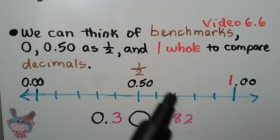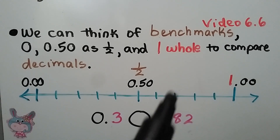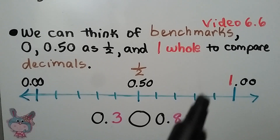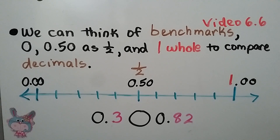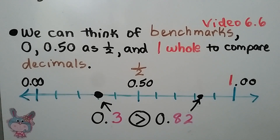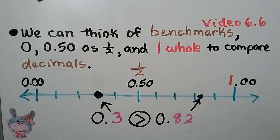Eighty-two hundredths would be more than a half, so it would be on the other side. That means three tenths is less than eighty-two hundredths. We learned about benchmarks back in video 6.6, which will be linked in the description.